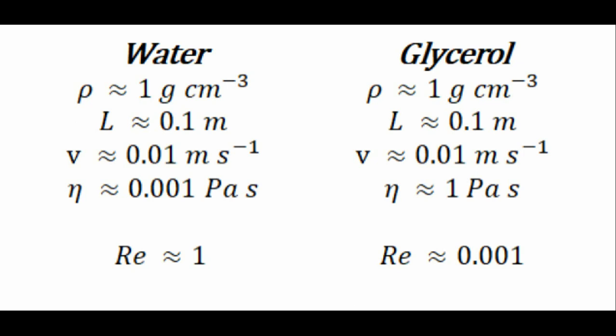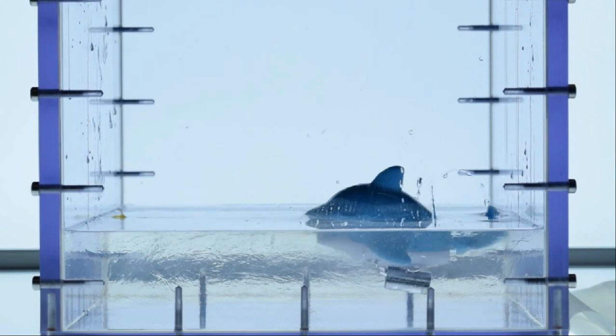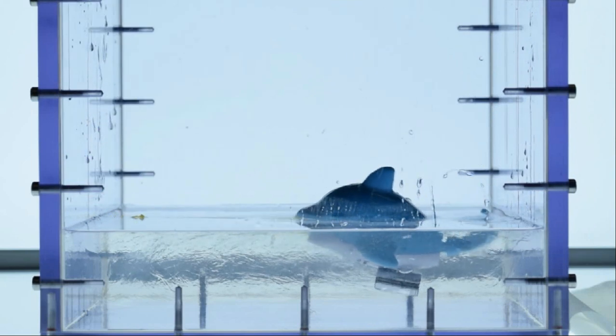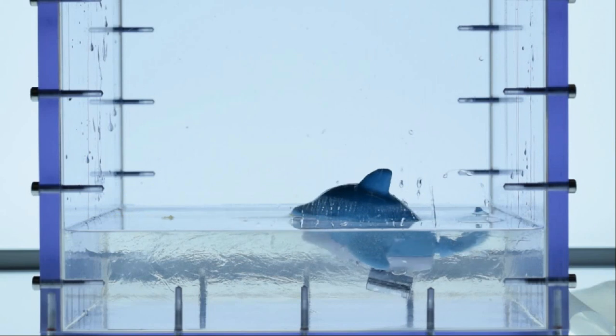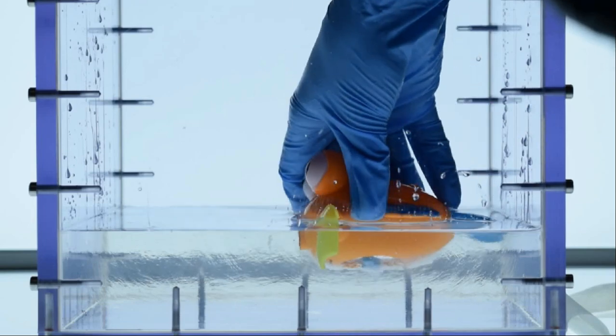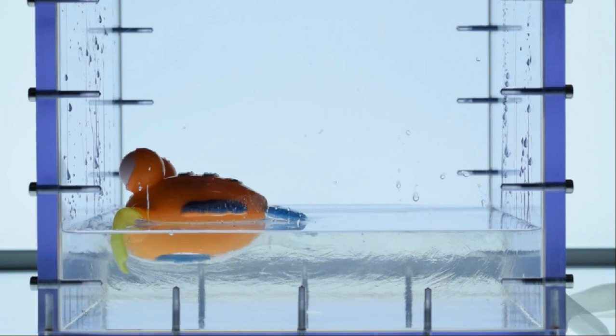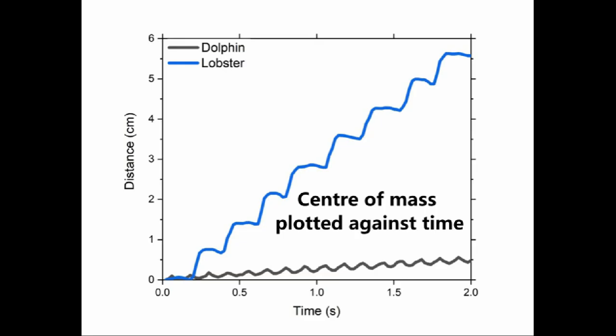We enter the regime of the Stokes flow, where time reversibility will inhibit Lucas from swimming. We have weighted Lucas down a bit so he would remain sufficiently submerged. As expected, his reciprocal motion is not enough to make him swim. The red line shows his path in water and the grey line in glycerol — clearly, Lucas has a very hard time getting through the low Reynolds number fluid. June, on the other hand, moves almost as easily through glycerol as through water. Comparing June and Lucas, June is the clear winner in glycerol: Lucas the Dolphin is hardly going anywhere, while June the Lobster is making good progress with every stroke.